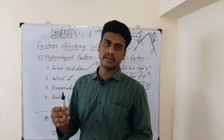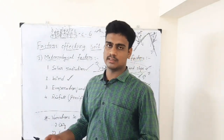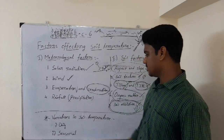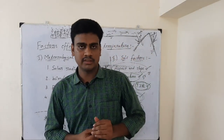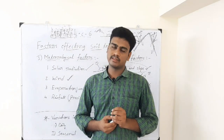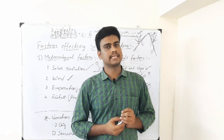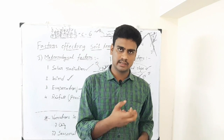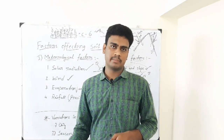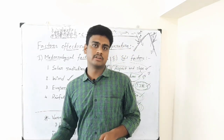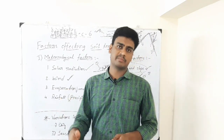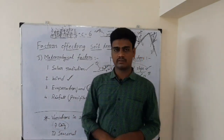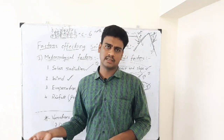As with air temperature variations - diurnal and seasonal - we also have daily and seasonal variations in soil temperature. In daily variation, when the sun rises, soil temperature gradually increases, and as the sun sets, soil temperature gradually decreases. However, during night time, temperature may remain relatively high especially in the deeper layers of the soil.